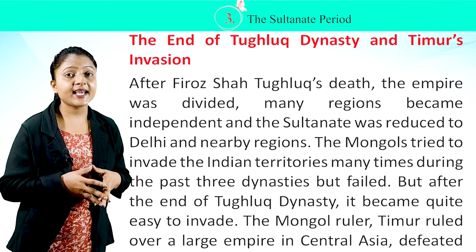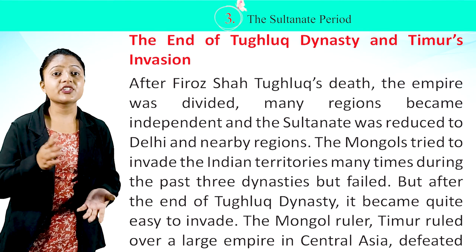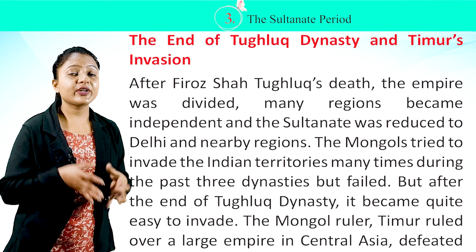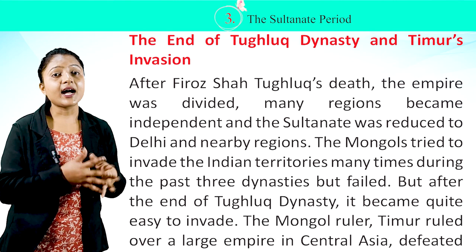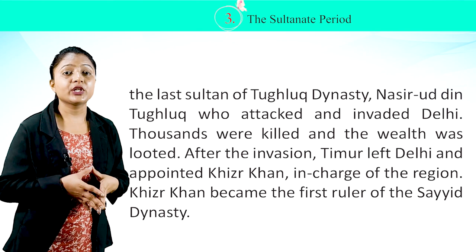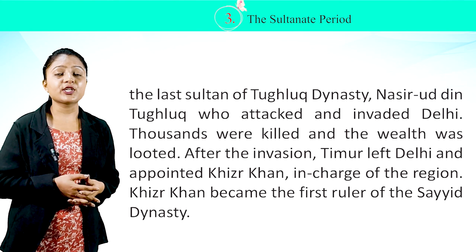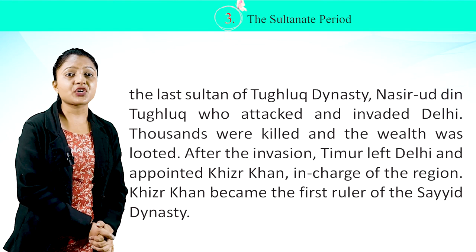The End of the Tughlaq Dynasty and Timur's Invasion. After Firoz Shah Tughlaq's death, the empire was divided. Many regions became independent and the Sultanate was reduced to Delhi and nearby regions. The Mongols had tried to invade Indian territories many times but failed. However, after the end of the Tughlaq Dynasty, it became easy to invade. The Mongol ruler Timur, who ruled over a large empire in Central Asia, defeated the last Sultan of the Tughlaq Dynasty, Nasiruddin Tughlaq, and attacked and invaded Delhi. Thousands were killed and wealth was looted. After the invasion, Timur left Delhi and appointed Khizr Khan in charge of the region, who became the first ruler of the Sayyad Dynasty.